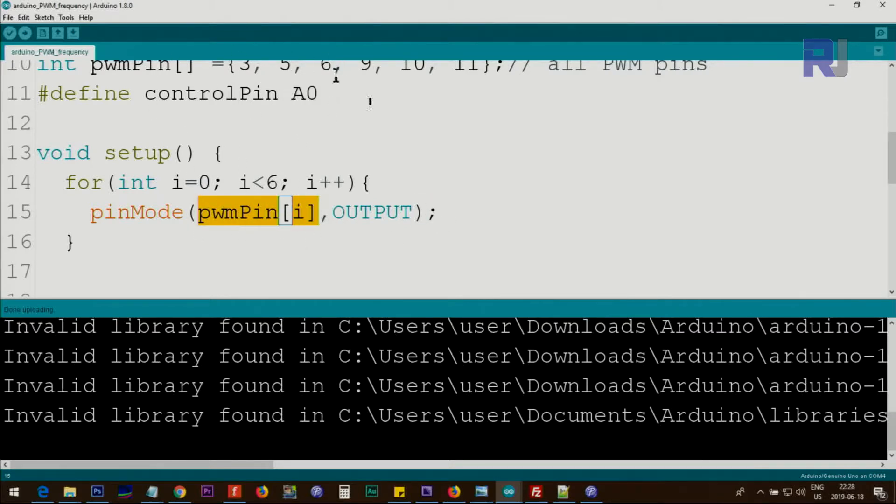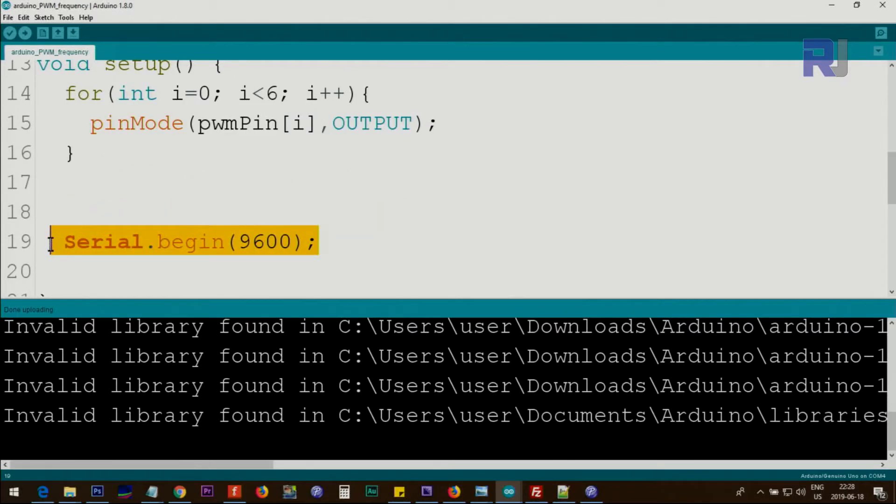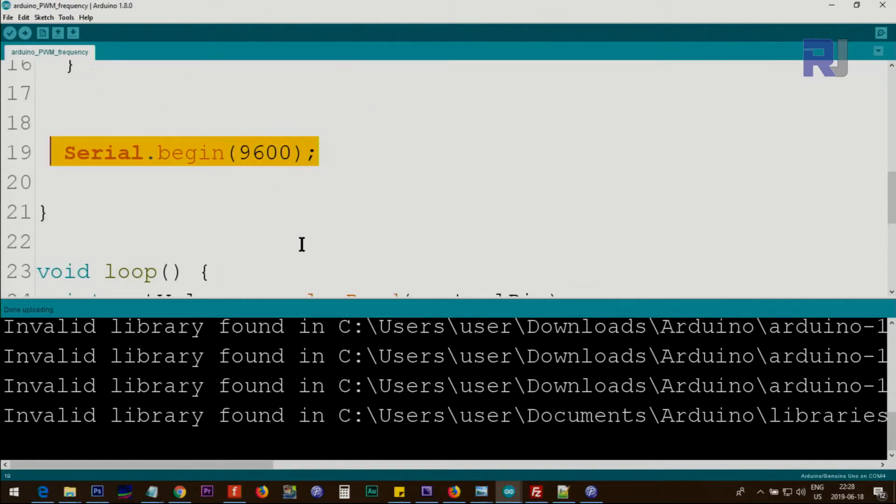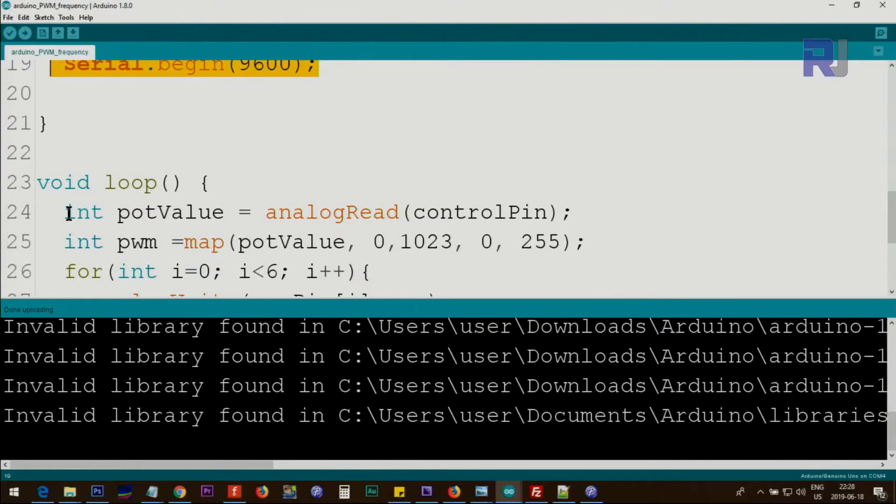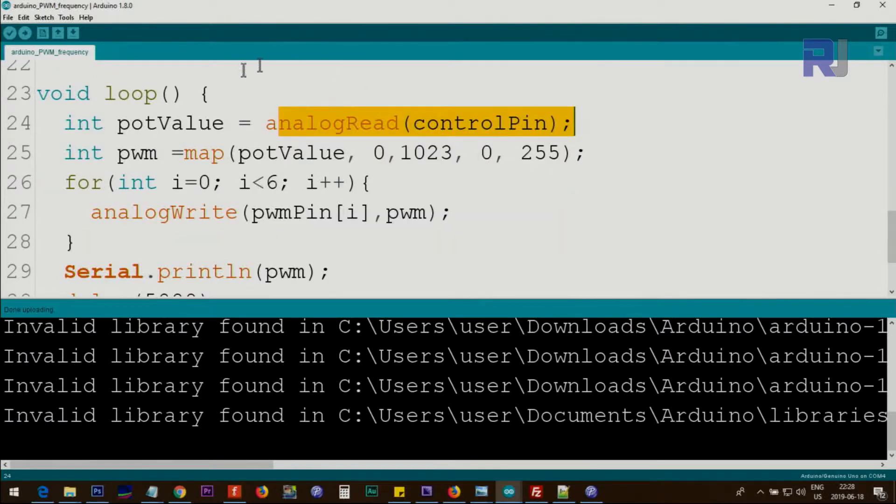We initialize the serial monitor with 9600 baud. This line is reading the potentiometer value and the value is stored in pot_val. Then the map function will convert it. It gets that value which is from 0 to 1023, it has 1024 steps. We map or convert it to the values between 0 to 255. 0 means 0% duty cycle and 255 means 100% duty cycle.